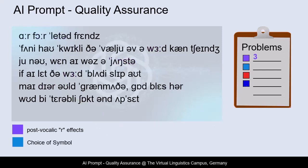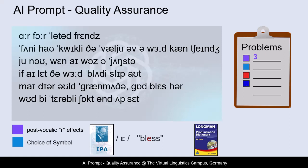The choice of symbols depends on the transcription system chosen. For example, in a pure IPA system, the Epsilon is used in words like 'bless.' In the LPD — that is the Longman Pronouncing Dictionary notation — which is commonly used in education, the simple letter E is used instead. In our text this concerns seven cases.